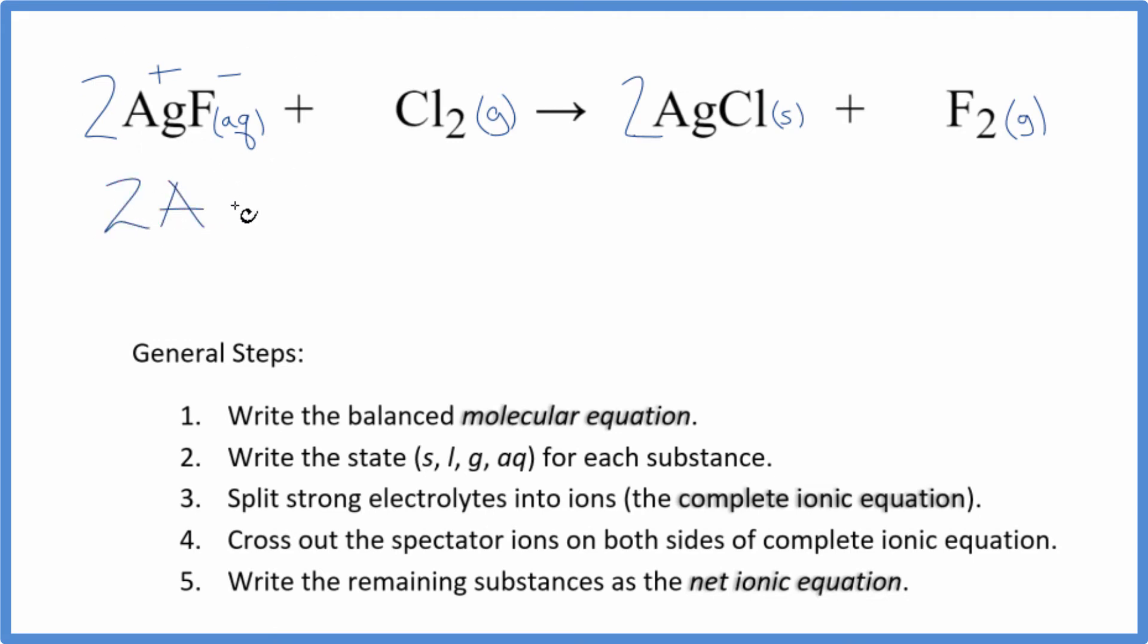So we have two silver ions. That's gonna be aqueous. That's dissolved in our liquid. Plus we have the fluoride ion. Two of those. This two applies to everything. Then we don't split the Cl2 up. That's a gas. So we'll just write Cl2 gas. Those are the reactants.